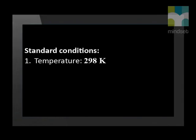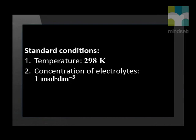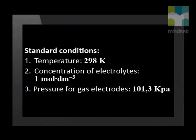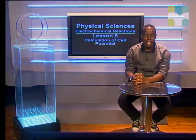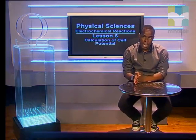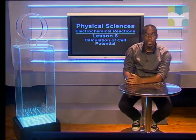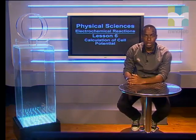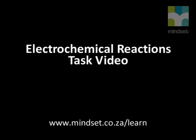The E° cell will be the cell potential under standard conditions. Standard conditions are a temperature of 298 K, each electrolyte at a concentration of 1 mol·dm⁻³, and any gaseous reactants at a pressure of 101.3 kPa. More of these kinds of problems can be found in the task video. Until next time, when we look at why a battery goes flat — you'll also find more information on our website at www.mindset.co.za/learn. Goodbye.